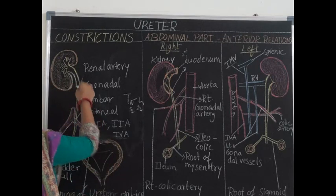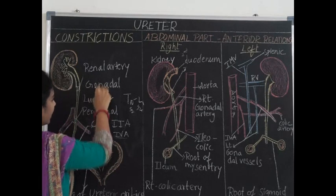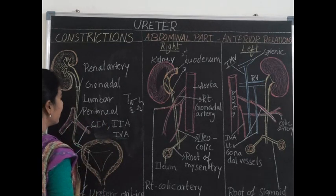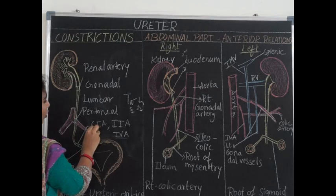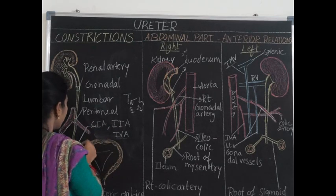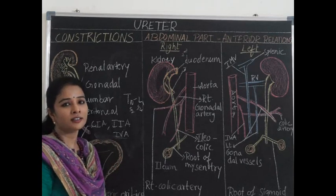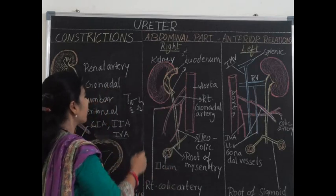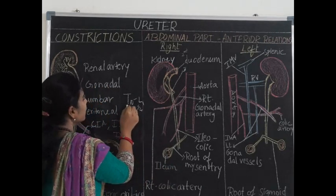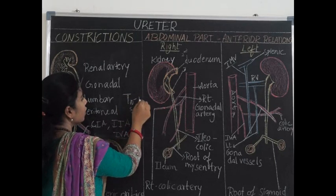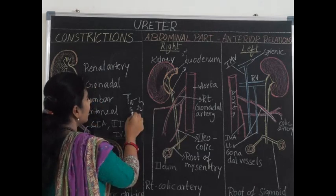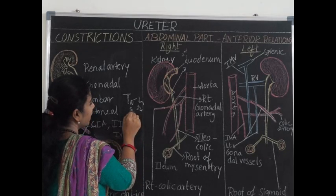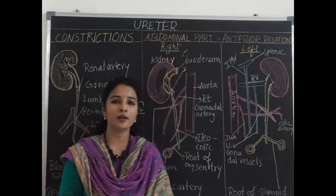Regarding blood supply: the proximal part of the ureters is supplied by the renal arteries and gonadal arteries. The mid-segment is supplied by the lumbar arteries and peritoneal arteries. After crossing the pelvic brim, the ureters are supplied by direct branches of the common iliac and internal iliac arteries. Before termination, the ureter is supplied by the inferior vesical artery in males, and by the uterine artery and vaginal arteries in females. For nerve supply, sympathetic innervation is from T10 to L1, and parasympathetic supply is from the hypogastric plexus, derived from sacral segments S2 to S4.